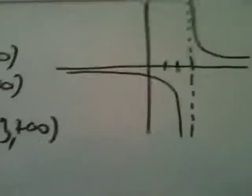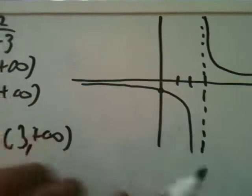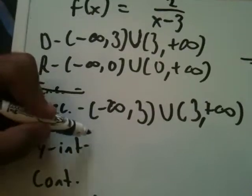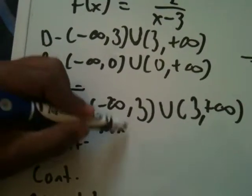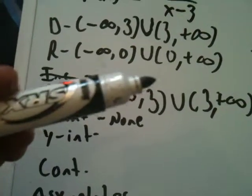Now we're looking for intercepts. Well, there is no x-intercept, but there is a y-intercept right here. So we're going to find that y-intercept, but first we're going to say none for x-intercepts. I'm actually using a thick marker. I don't like using it, but my other marker is running low.